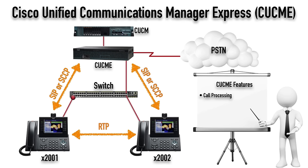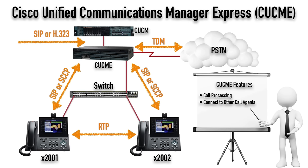We could also speak out to the PSTN via the CUCME router over a TDM circuit like an ISDN PRI, and connect to other call agents such as a Cisco Unified Communications Manager server or cluster at another site over a SIP trunk or H.323. We can also integrate a messaging solution called Cisco Unity Express as a module inside the router. CUCME can be managed through a GUI like Cisco Configuration Professional, a web browser interface, or — as I typically do — from the command line interface.